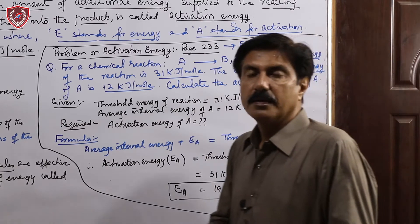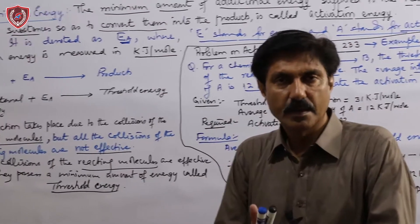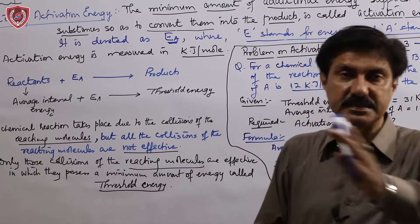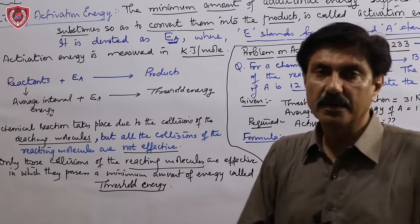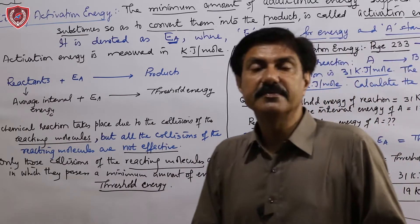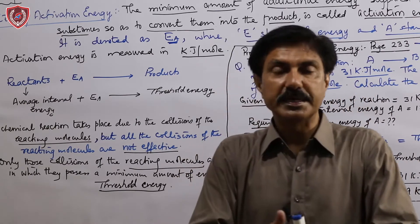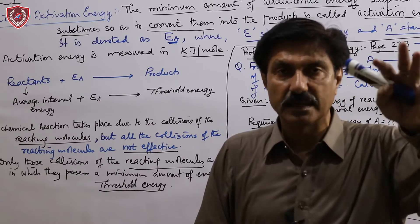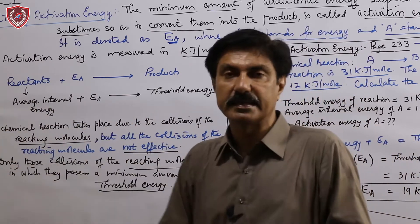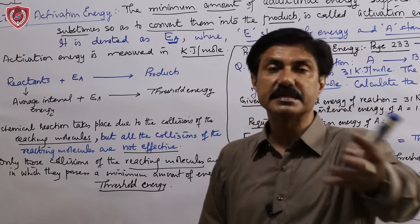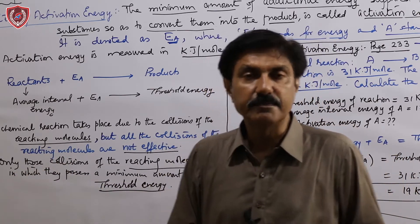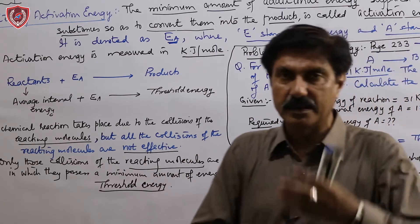A reaction in which reactants have relatively low average internal energy will require more activation energy to complete. Providing more heat takes more time, so the reaction runs slowly. Remember: slow reactions have high activation energy because reactants have low average internal energy. To bring them to threshold energy level, you supply more activation energy — supplying more activation energy takes more time, so the reaction works at a slow rate.